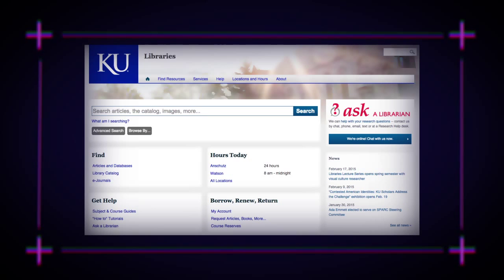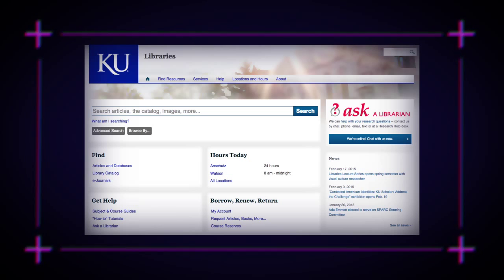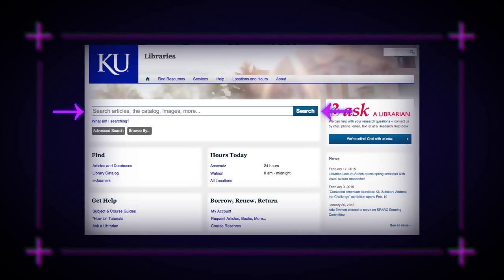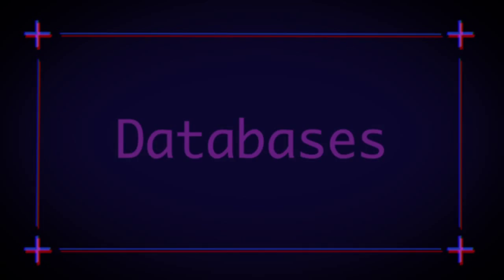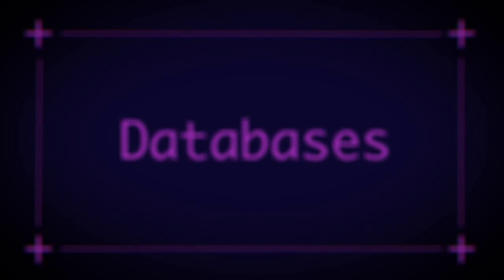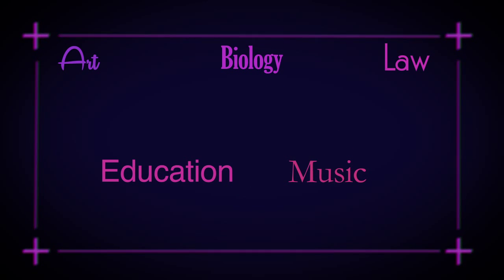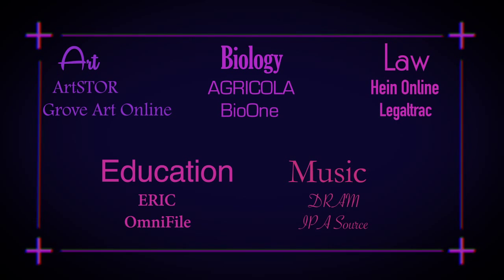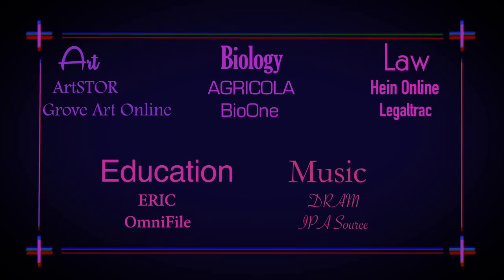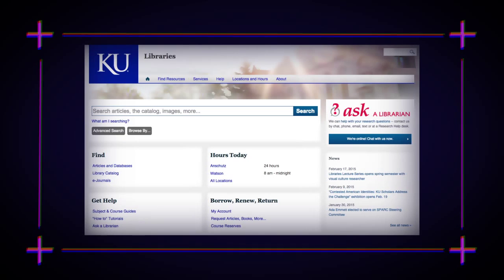The library's homepage is filled with important tools that can help you improve your research and writing. From our main page, you can use the discovery tool to simultaneously search multiple KU Libraries' databases, as well as the catalog. For more subject-specific information, you can follow the link to articles and databases, where you'll find a complete list of databases presented both as an A-Z list and grouped by subjects for your convenience.